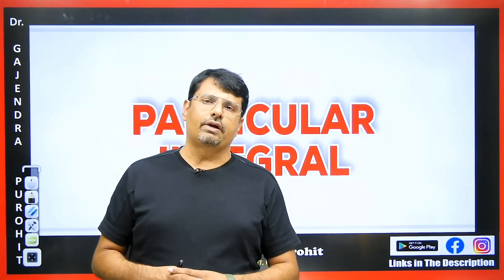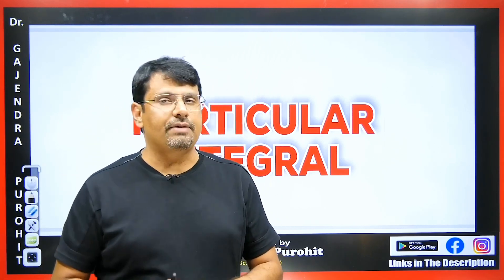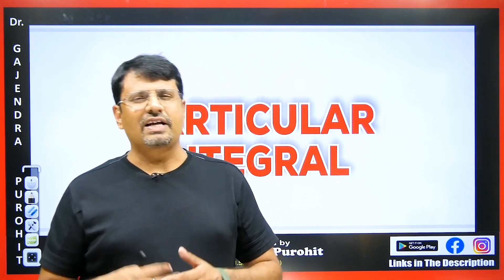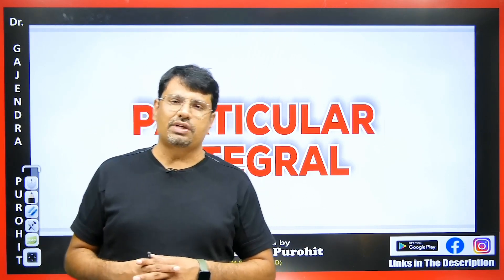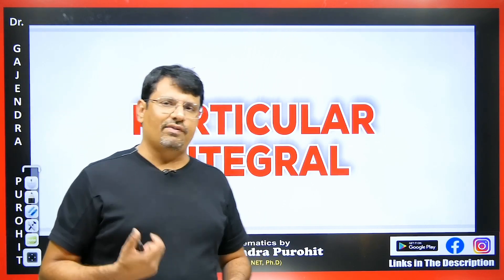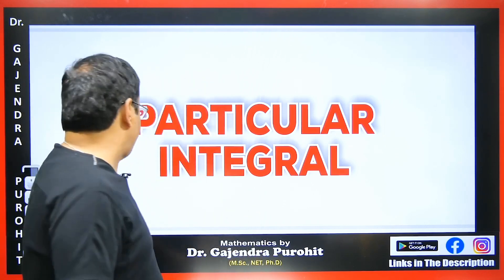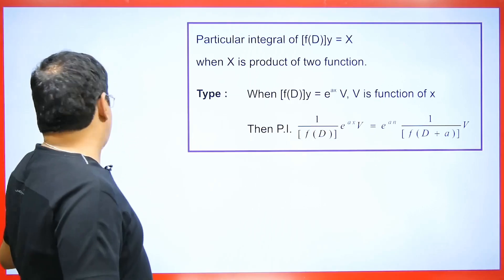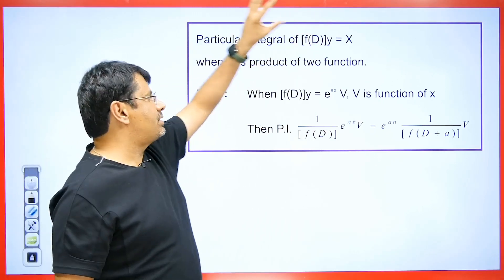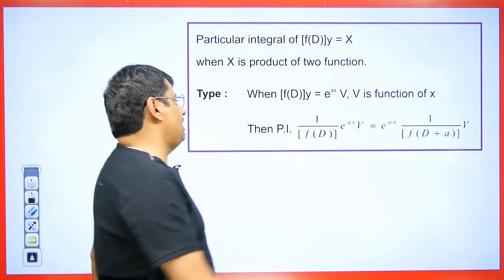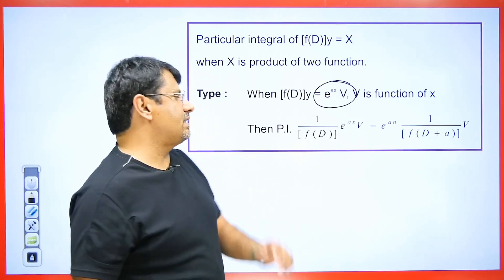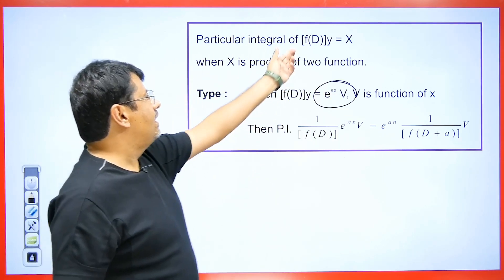Today I will explain the particular integral of e raised to the power x into a function, which can be cos, sin, x squared plus x, or any function. How do we find its particular integral? Let's discuss that today. If we have any differential equation with a function like e raised to the power ax multiplied by V, let's see how to calculate its PI — there is a simple rule for this.